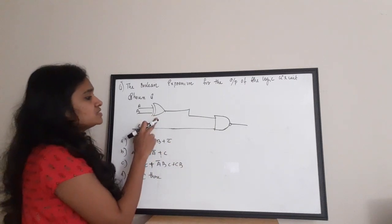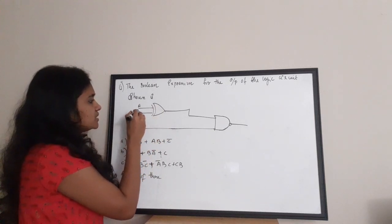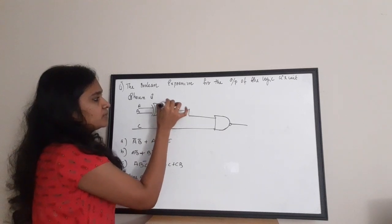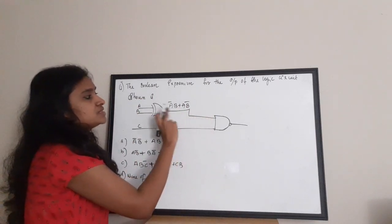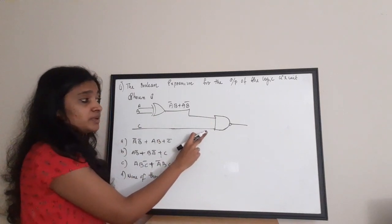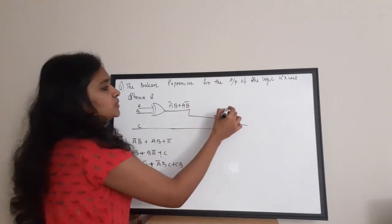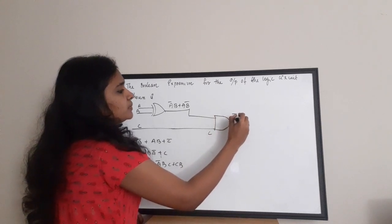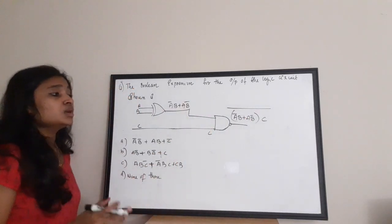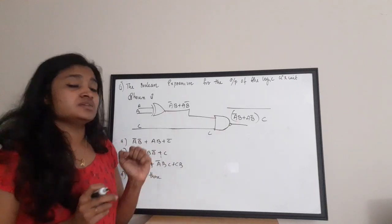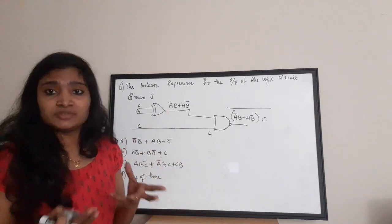The XOR gate takes A and B as inputs and gives an output of ĀB + AB̄. This output then goes into the NAND gate along with input C, and the product is inverted. So the output is (ĀB + AB̄) · C, the whole bar. The important tool to solve this is De Morgan's theorem — knowing De Morgan's theorem lets you handle about 90% of logic and Boolean simplifications.